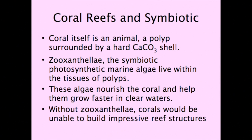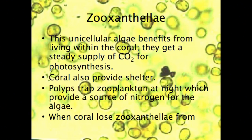Coral reefs: the coral itself is an animal — a polyp surrounded by a hard calcium carbonate shell. Zooxanthellae, the symbiotic, photosynthetic marine algae, live within the tissues of the polyps. These algae nourish the coral and help them grow faster in clear waters. Without the zooxanthellae, corals would be unable to build their impressive reef structures. The zooxanthellae are unicellular algae that benefit from living within the coral polyp because they have a steady supply of carbon dioxide for photosynthesis. The corals also provide shelter.